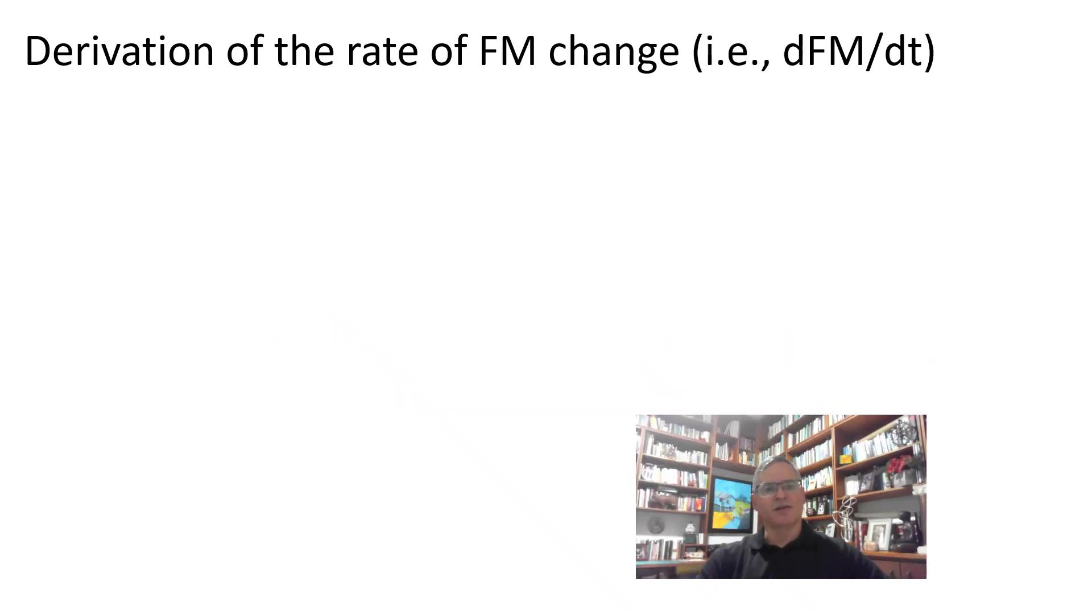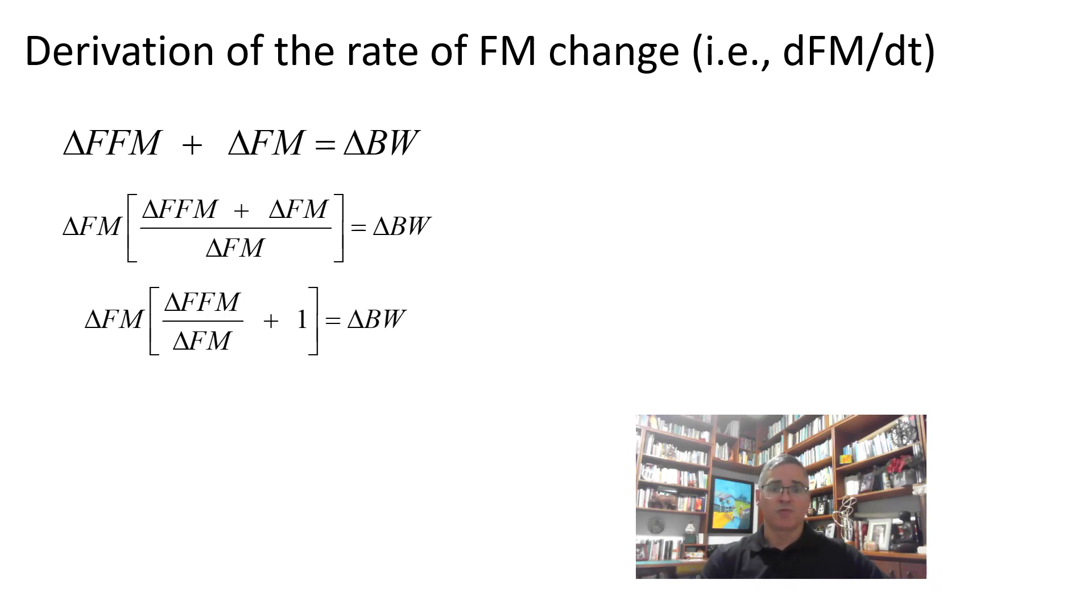At last is the derivation of the rate of fat mass change. Once again, any change in body weight equals the sum of the changes in fat-free mass and fat mass. Multiplying and dividing the left-hand side by the fat mass change produces the following expression. This operation leads to the following result, which is the same as the next equation.